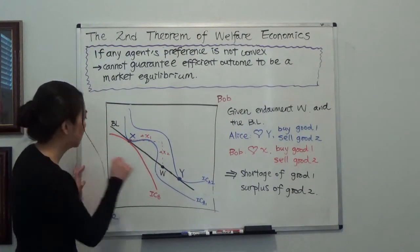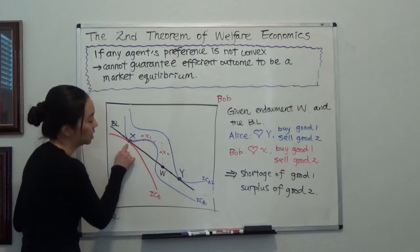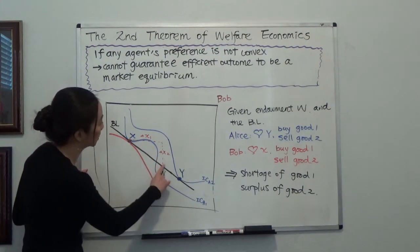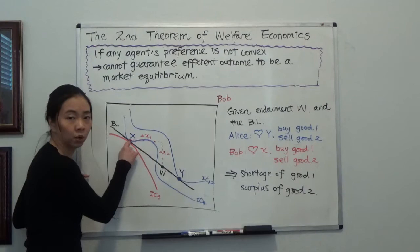What about Bob? Bob will say, I want to move to x, meaning I want to sell my good two and buy some good one.